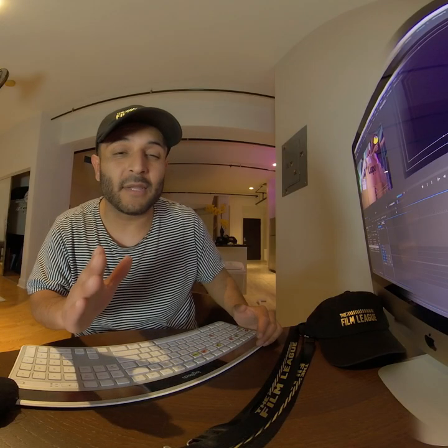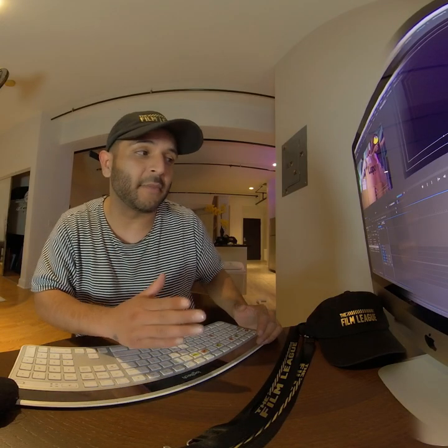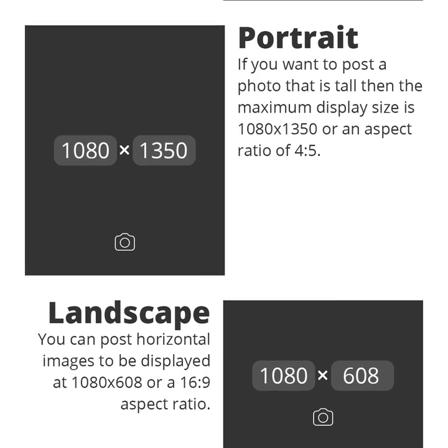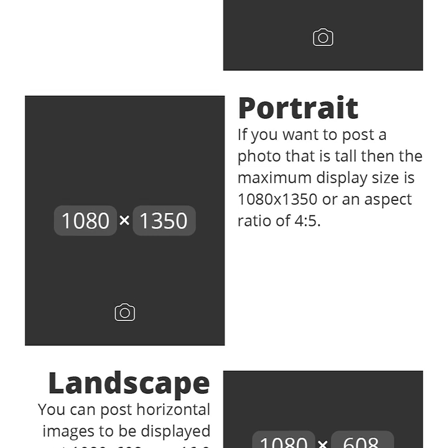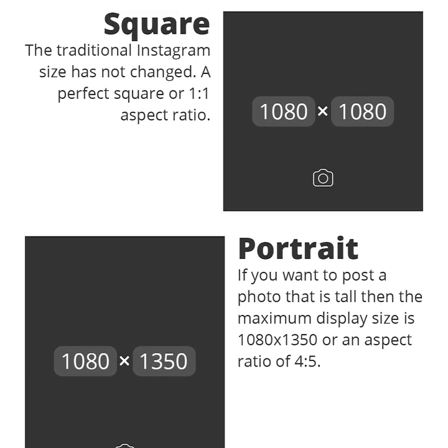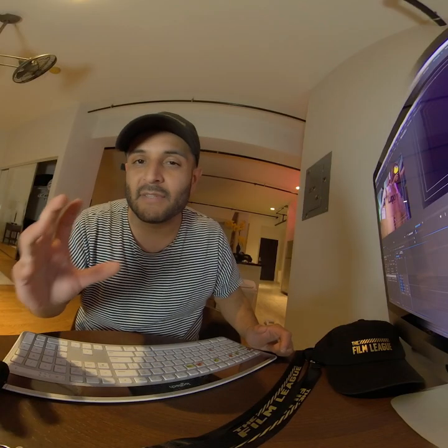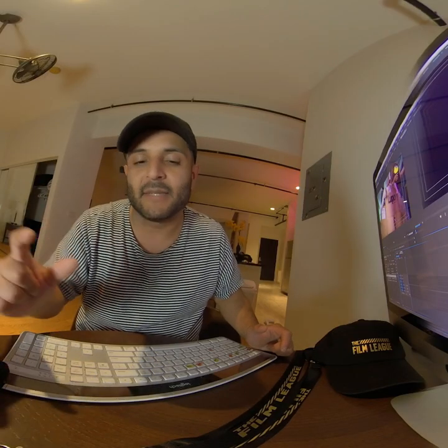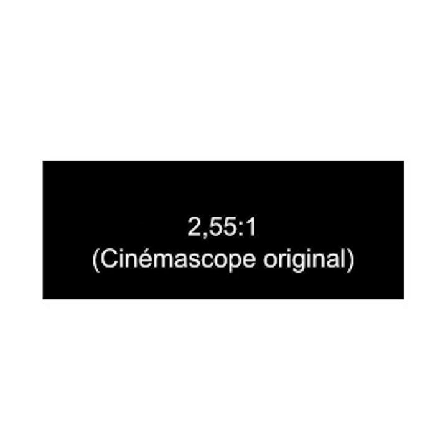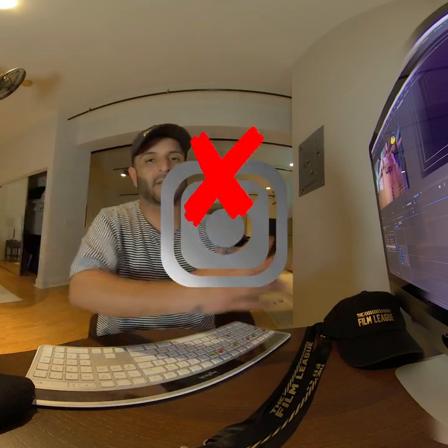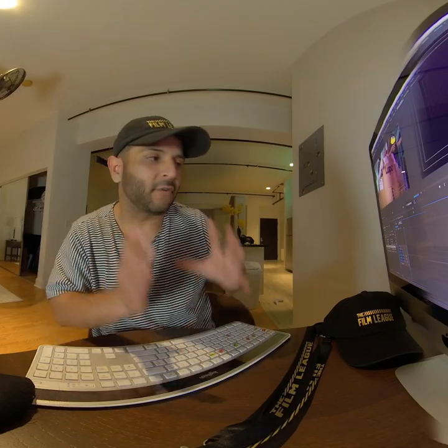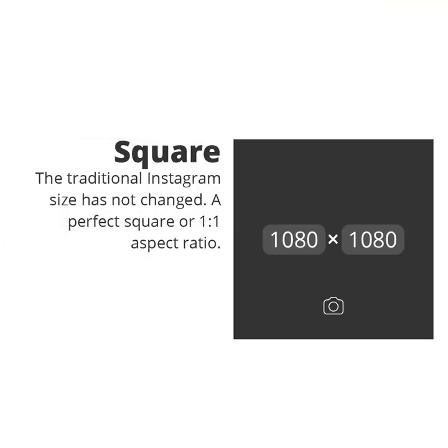Now the way the new algorithm works within Instagram, you actually get rewarded and placed higher on the feed if your content takes up more of the frame. I know a lot of us filmmakers are shooting 16x9 — 2.35, 2.55 — and that works amazing everywhere except for Instagram. If you want your video seen, unfortunately you're going to have to put it in a box.